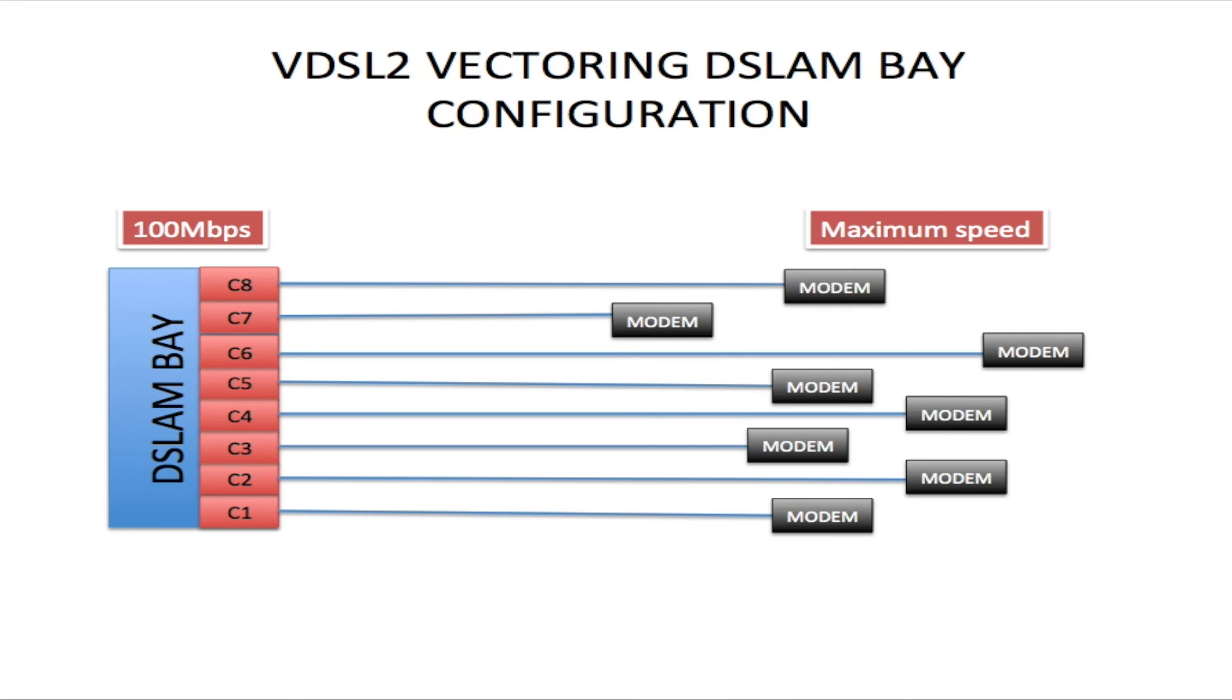Once all VDSL2 vectoring requirements are met, there won't be any crosstalk on any of the VDSL2 lines, and all lines should operate at optimum speed. Hope this video was helpful to you, and if you would like to see more of our telecommunications videos, you can click on the subscribe link below so that you'll know when our new videos are released. My name is Trevor, and thank you for watching.